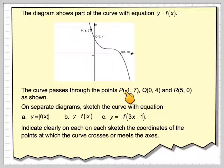The curve passes through the points P at minus 1, 7, Q at 0, 4, and R at 5, 0.